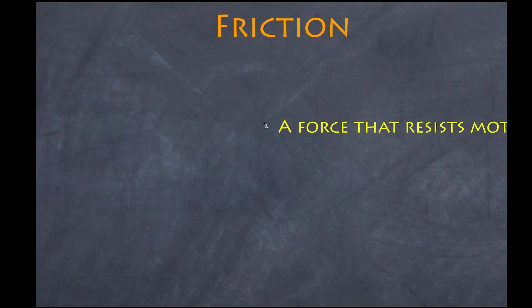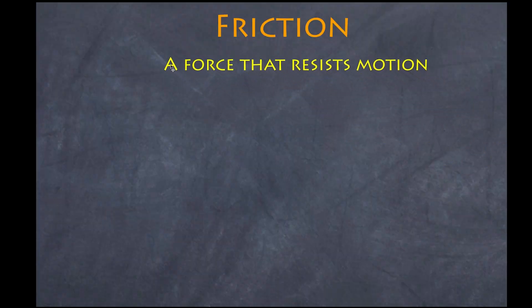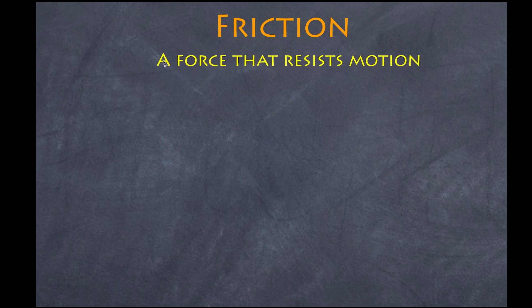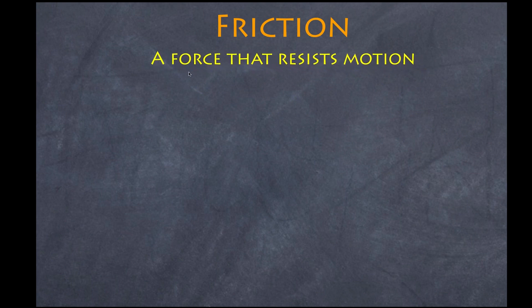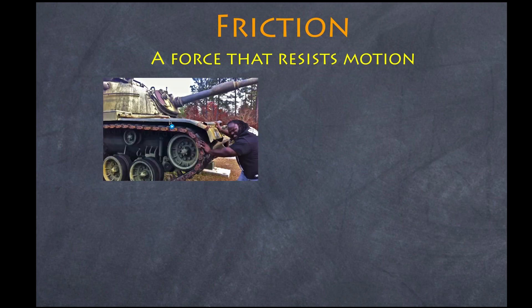So let's start by defining friction. Basically, friction is a force that resists motion, and friction can be categorized in one of four ways. The first way is simply static friction — you apply a force and it resists the motion of the object, and you find the object is not moving.